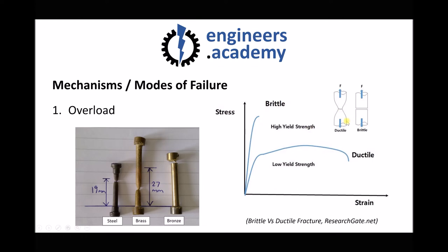Here we have ductile and brittle fractures, caused by tensile loads. Different materials fail in different ways, as we've seen during UTS tests in previous units. When a material fails due to ductile fracture — a soft ductile material — we see necking at the centre prior to failure, which is a reduction in cross-sectional area at the failure point. Brittle fractures are slightly different: we see no necking and very little plastic deformation before failure. On the graph, our ductile material shows elastic deformation, plastic deformation, necking, and failure, while our brittle material shows elastic deformation and then a very small amount of plastic deformation before sudden brittle failure.